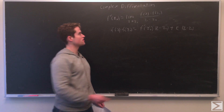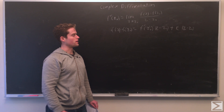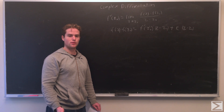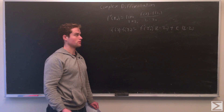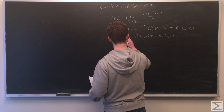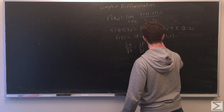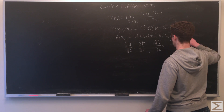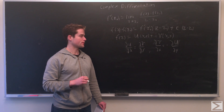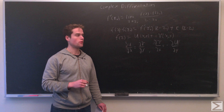To guarantee that a function is actually differentiable, we can use a neat little property: if it satisfies the Cauchy-Riemann equations, then it will be differentiable. The Cauchy-Riemann equations are: partial of u with respect to x equals partial of v with respect to y, and partial of v with respect to x equals negative partial of u with respect to y.